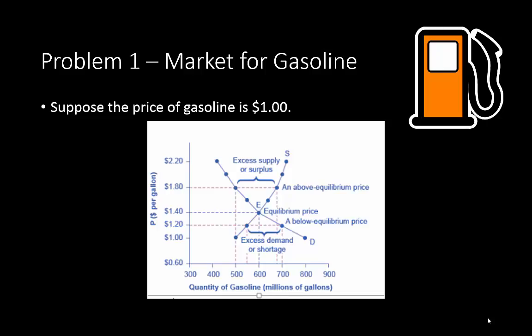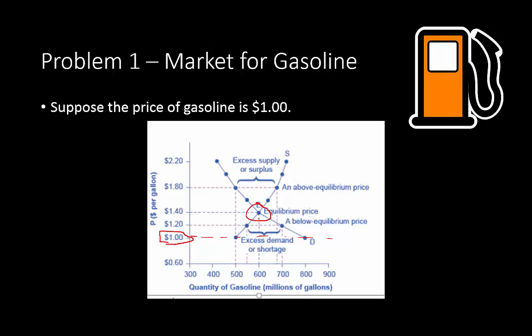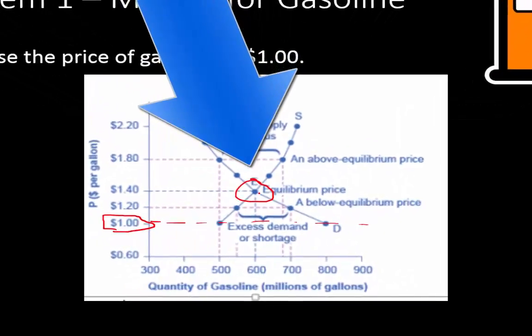The very first problem is about the market for gasoline. Here on this graph we see the supply curve and the demand curve for gasoline. Price is on the vertical axis. As we draw a horizontal price line across our graph we can connect the dots for demand and supply. Typically we would see the price coming to equilibrium, which is right here that I just circled.